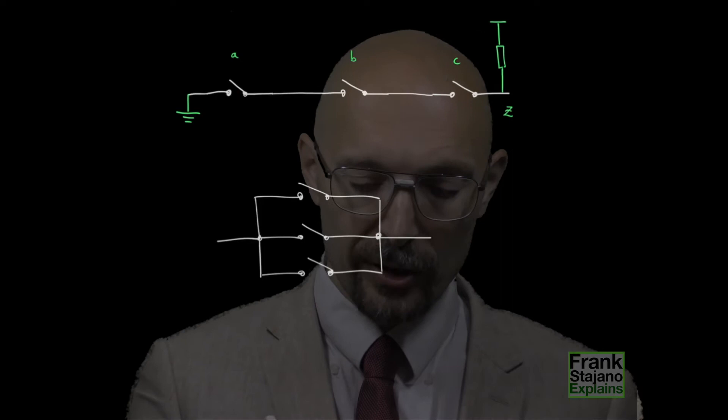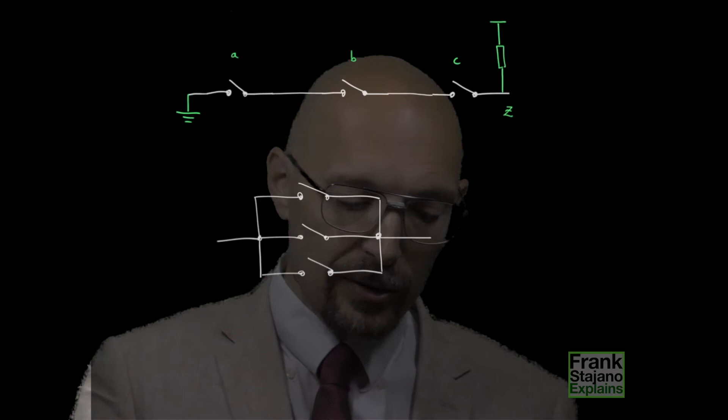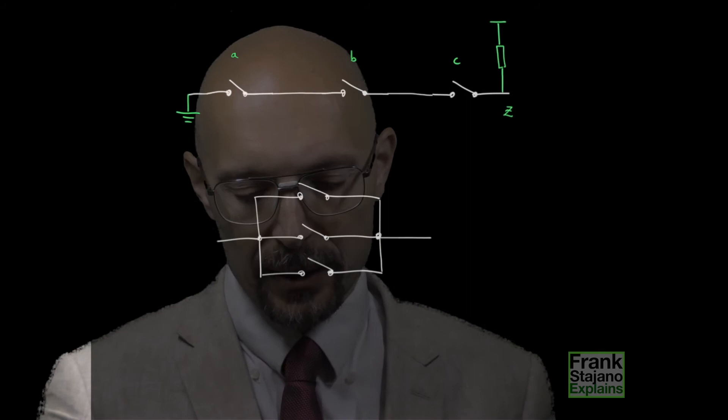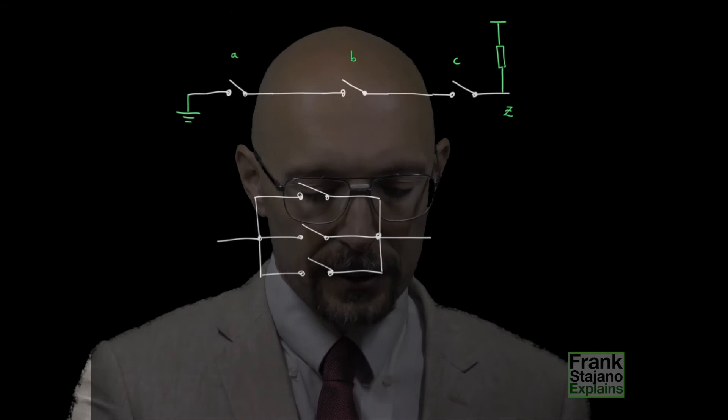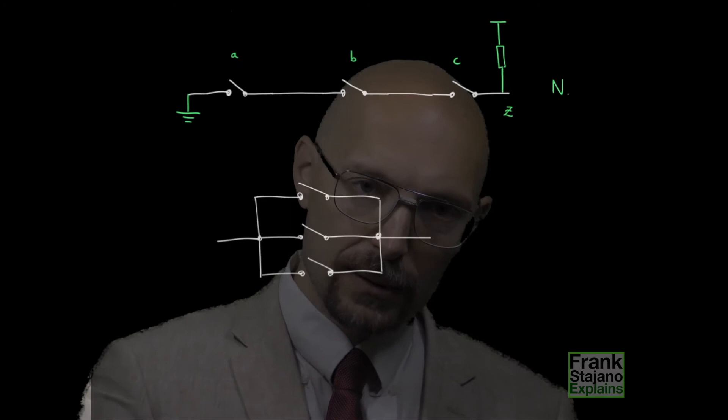Then, if all my inputs are at 1, all the switches are connected and this output Z is short-circuited to ground, so this is 0. So, 1, 1, 1 gives me 0. But, if any of the inputs is 0, then the corresponding switch will be disconnected and so this output will be not short-circuited to the ground and will be pulled up by the pull-up resistor, which will make it a logic 1. So, as soon as there is a single 0 in here, the output goes to 1, but if all the inputs are 1, then the output is 0. This is actually the truth table of NAND, not of AND anymore.